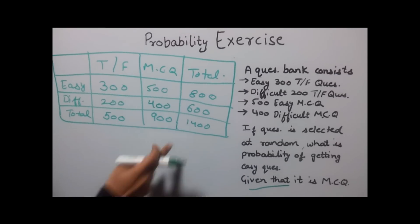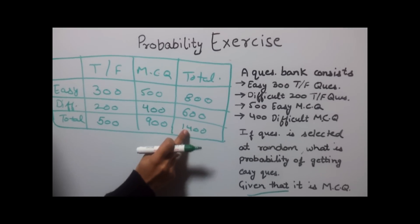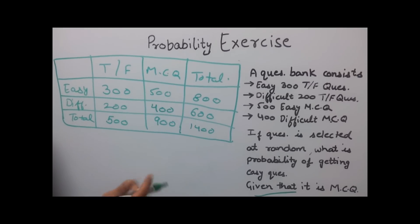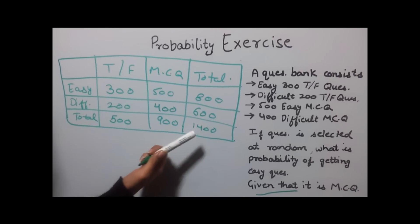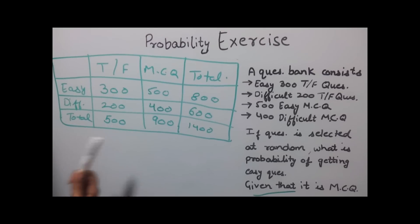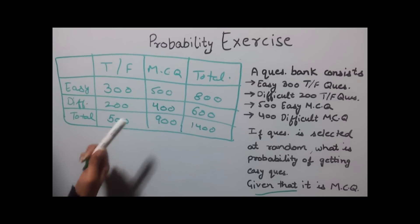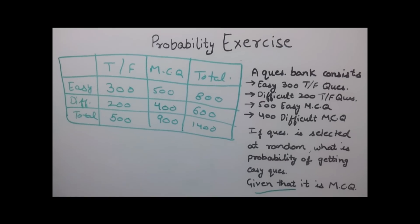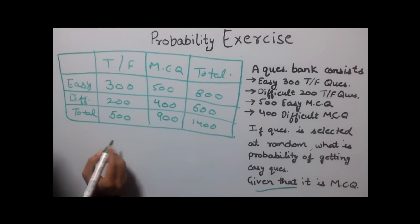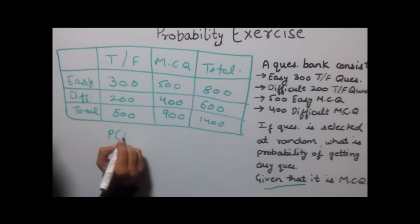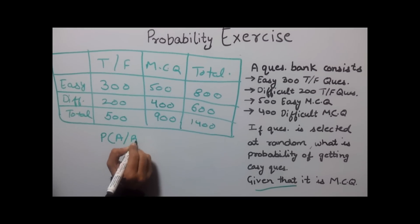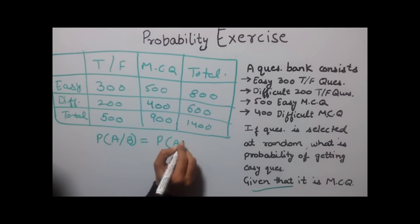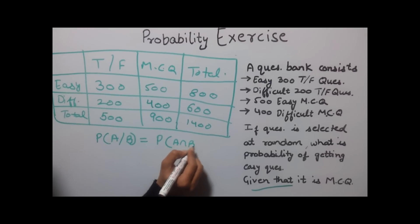Please check that the vertical sum and horizontal sum both equal 1400. If they don't match, there is a calculation mistake. Since this is a conditional probability question, the formula is: P(A|B) = P(A intersection B) divided by P(B).